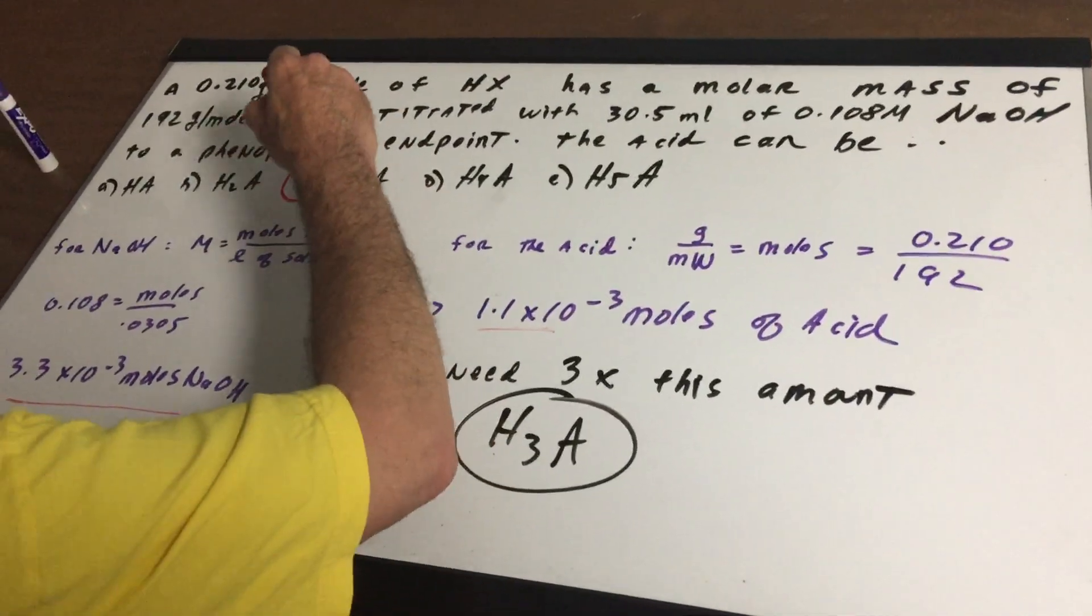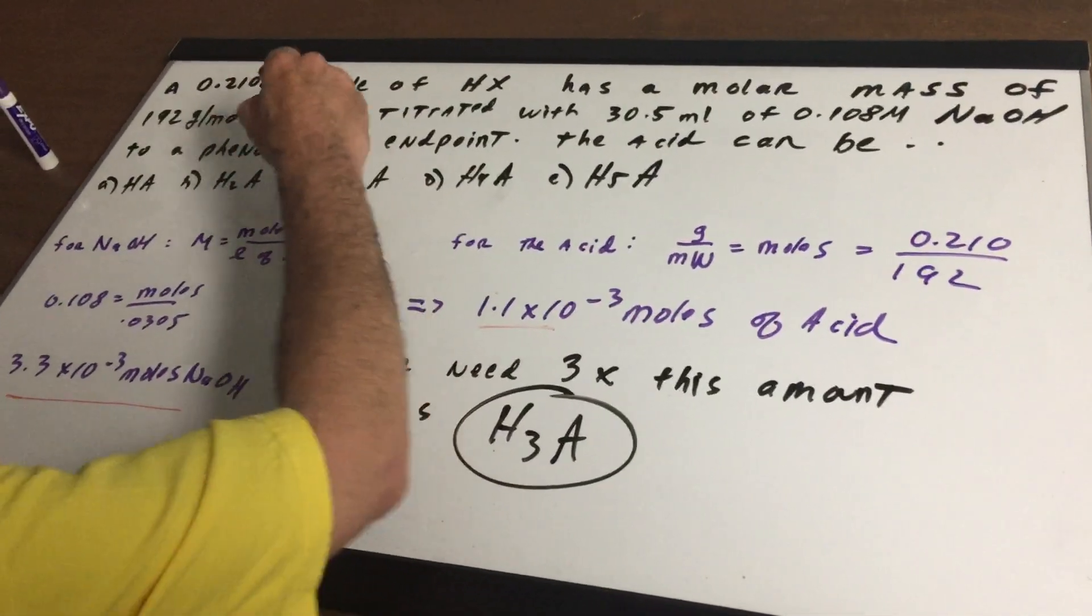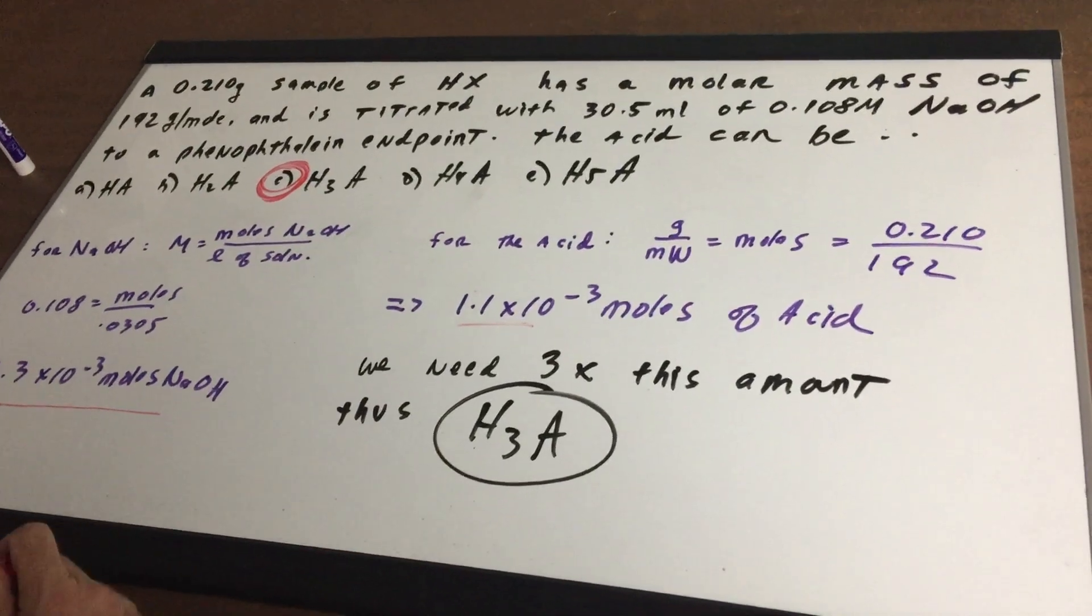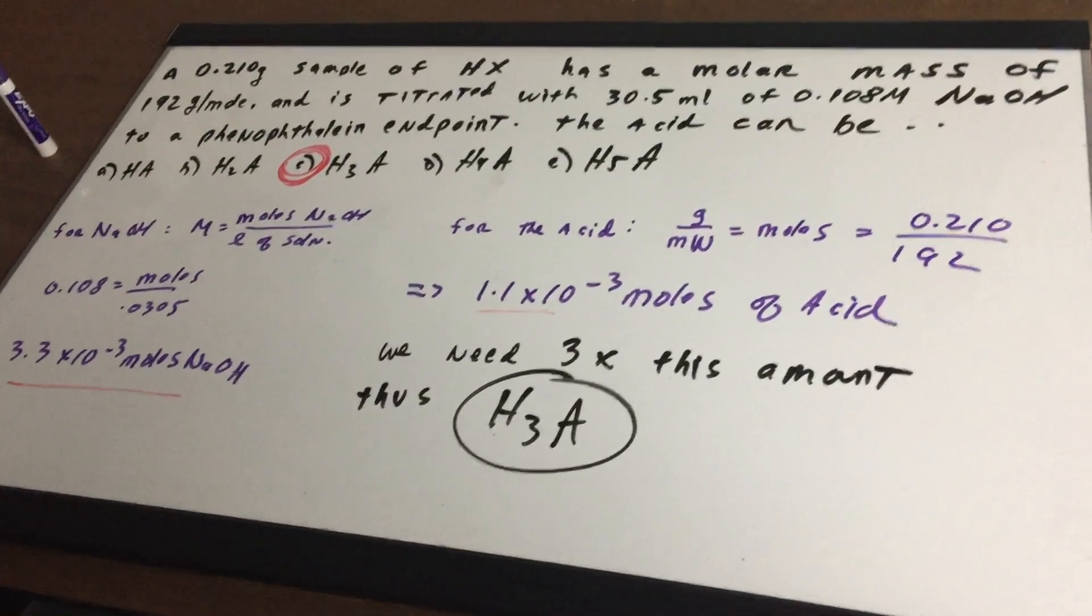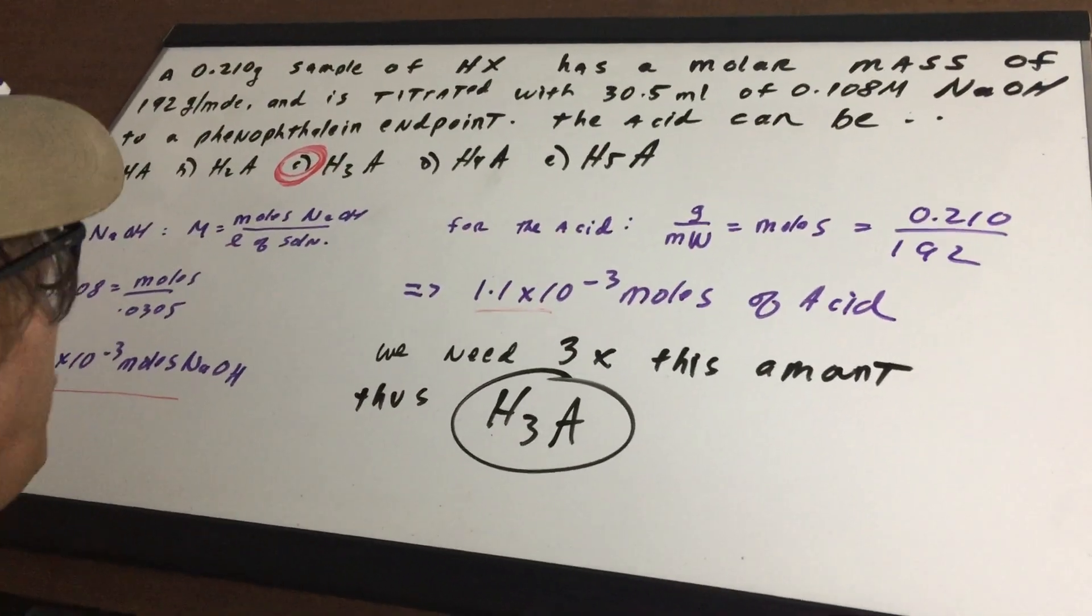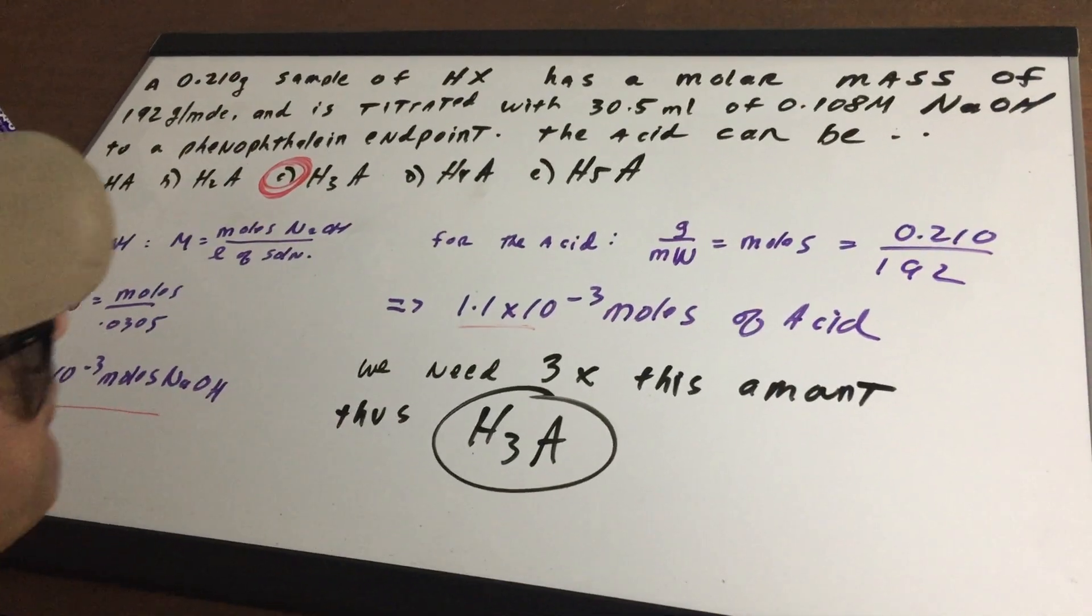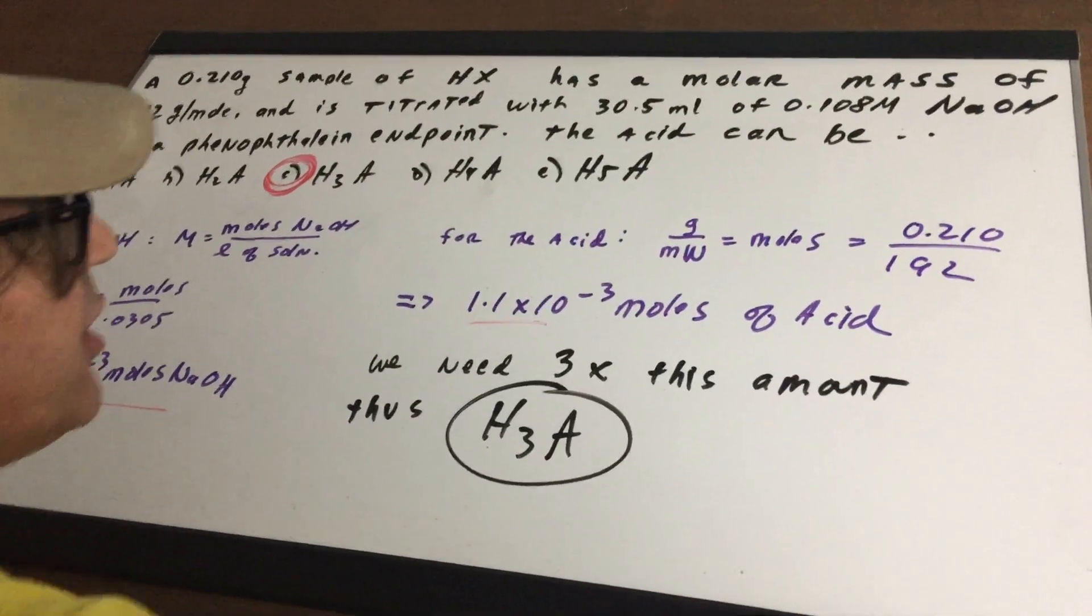So the correct answer is the acid would need to dissociate 3 moles. And we're assuming that all these go to completion. All right, I hope this helps on a very challenging problem. Good day to you.